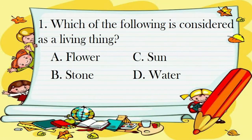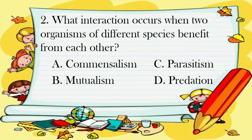Number 1. Which of the following is considered as a living thing? A. Flower. B. Stone. C. Sun. D. Water. Number 2. What interaction occurs when two organisms of different species benefit from each other? A. Commensalism. B. Mutualism. C. Parasitism. D. Predation.